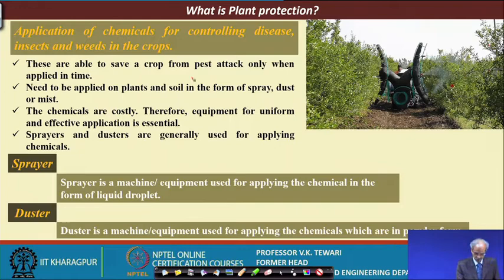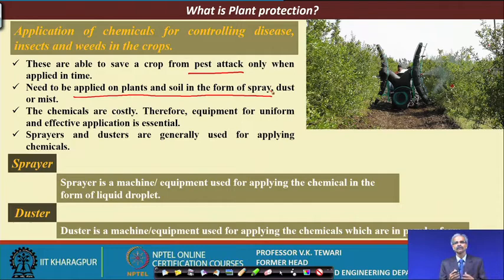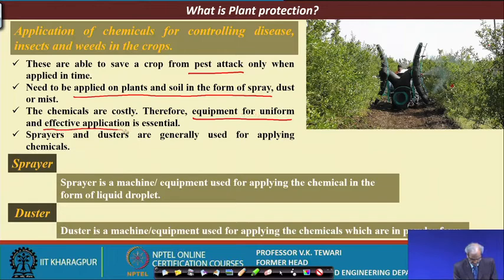The chemicals need to be applied on plants and soil in the form of spray. Sometimes when the chemical needs to be applied, we are talking of the plants, and sometimes on the soil. When we apply, it will fall onto the plants as well as on the soil. Therefore, equipment for uniform and effective application is essential. We want it to be very effectively and correctly applied onto the targeted plants.